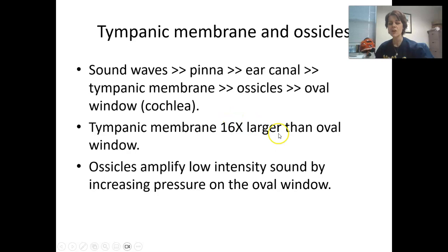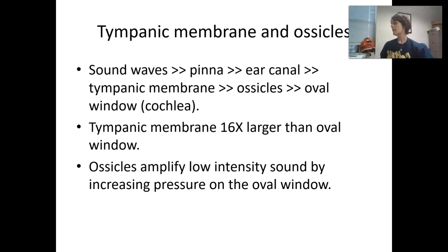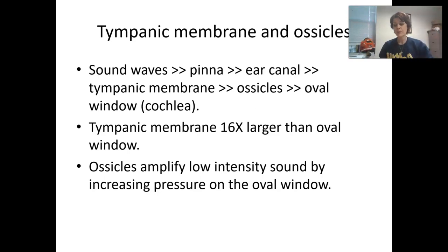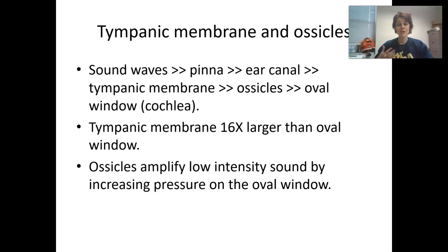The tympanic membrane is about 16 times larger than the oval window of the cochlea. By moving from a larger membrane to a smaller membrane, the vibration of the ossicles is amplified, and the oval membrane is going to move a lot. You can think of somebody very large wearing very tiny stiletto shoes — when you wear high heels, you're putting a lot of extra pressure on those tiny points. So the ossicles amplify low-intensity sound by increasing the pressure on the oval window.